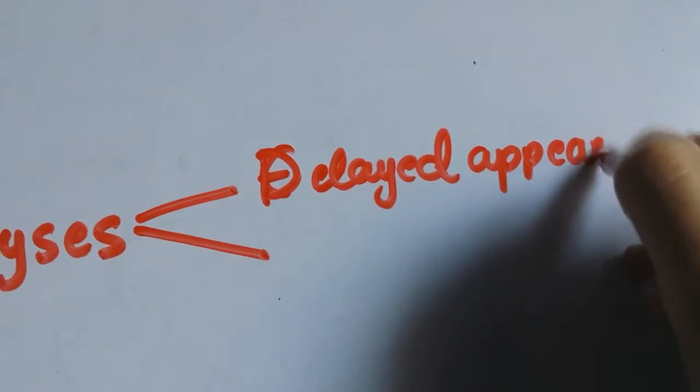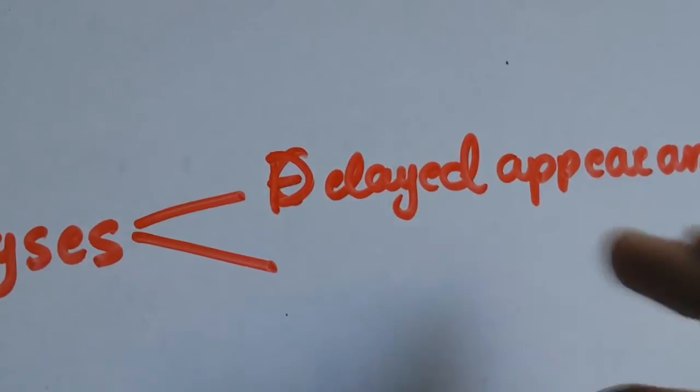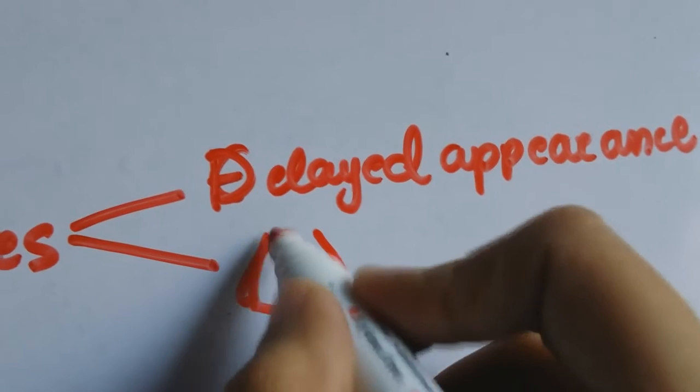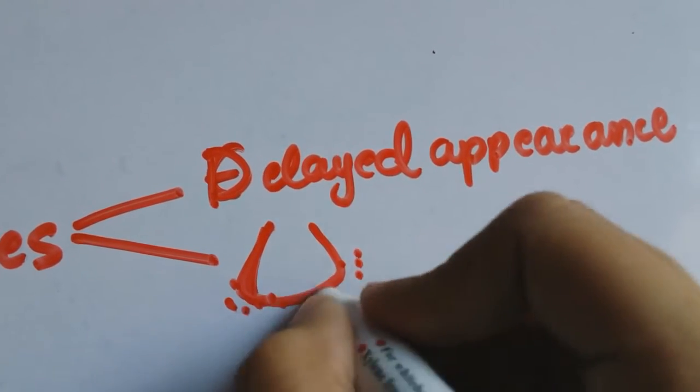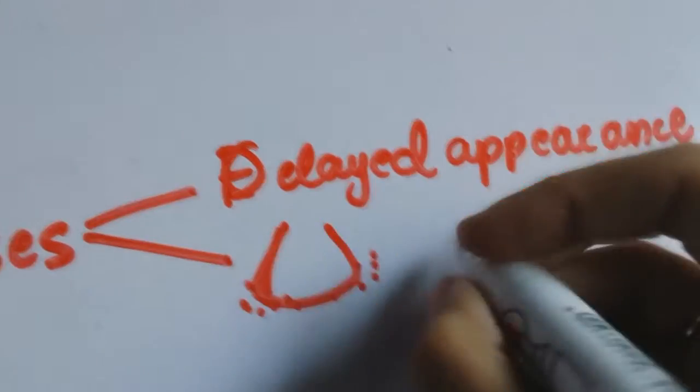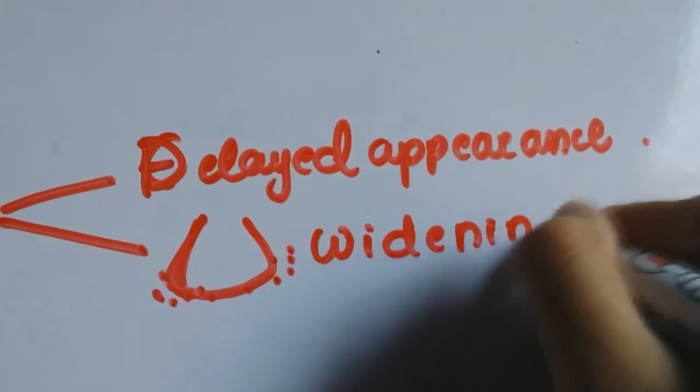And secondly the epiphyseal plate is widened and this is because there is accumulation of uncalcified osteoid around the epiphyseal plate which causes widening of the epiphysis.